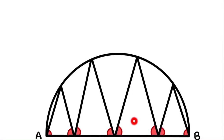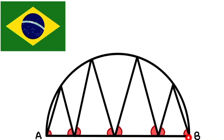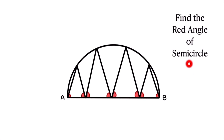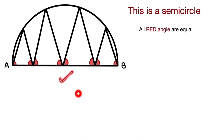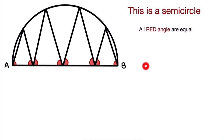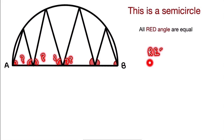Welcome back. Today we are going to solve this question from the Brazil Maths Olympiad. In this question, we have to find the red angle of a semicircle. All red angles are equal — it is given in the question. So we have to find the value of the red angle.